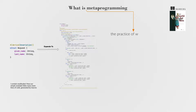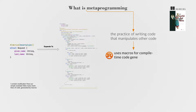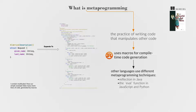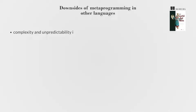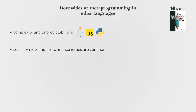Metaprogramming is the practice of writing code that manipulates other code. Rust uses macros for compile-time code generation. Other languages use different metaprogramming techniques, such as reflection in Java, or the eval function in JavaScript and Python. Metaprogramming can introduce complexity and unpredictability, especially in languages like Java, JavaScript, and Python.